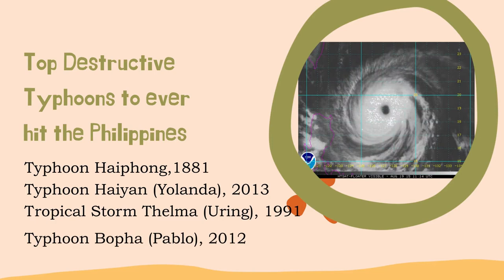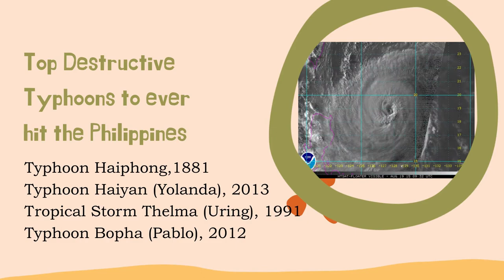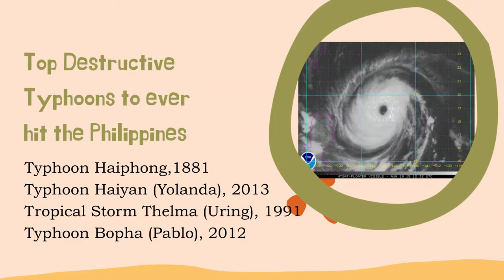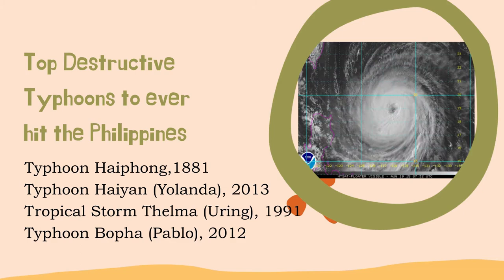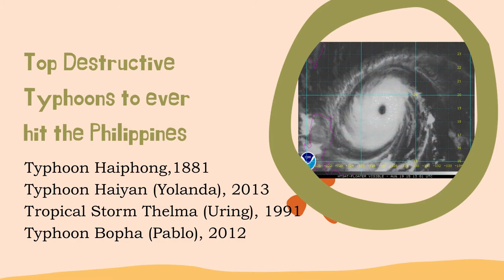Do you remember Typhoon Bofa or Pablo? It was the strongest tropical cyclone on record to ever affect Mindanao, making landfall as a Category 5 super typhoon with winds of 175 miles per hour, or 280 kilometers per hour. It had its landfall at Cateel on December 4, 2012.